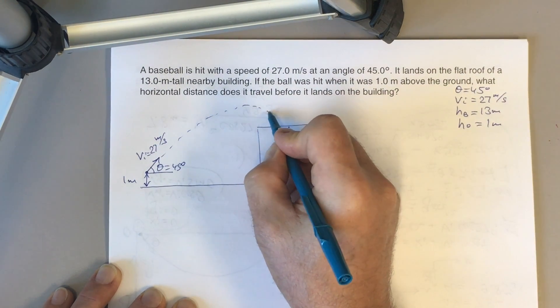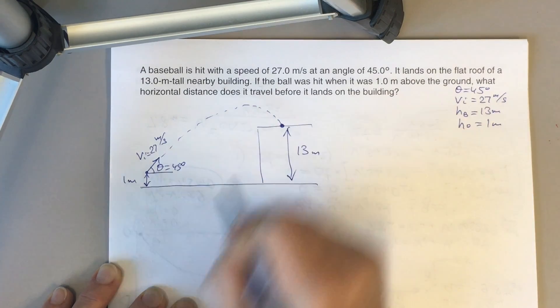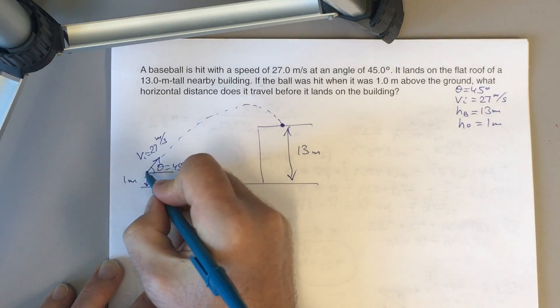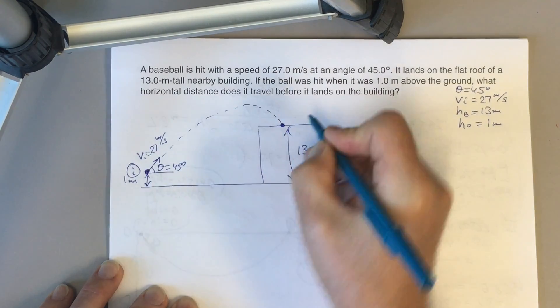It will reach its highest point and then fall and land on the roof of the building. So we have the initial point here, and the final point here.